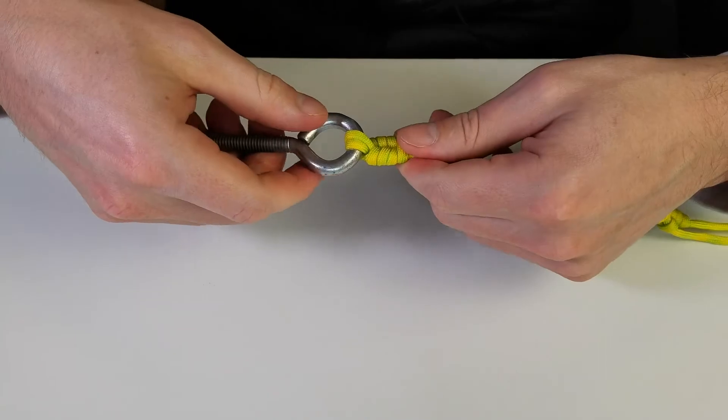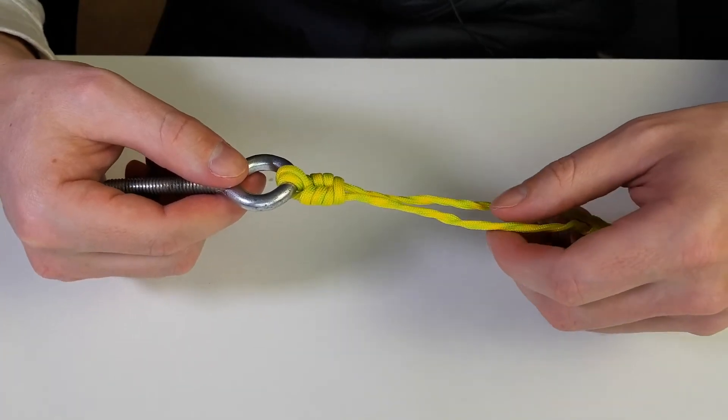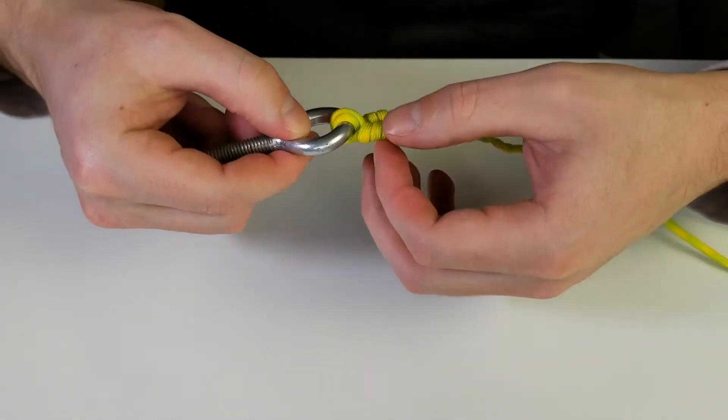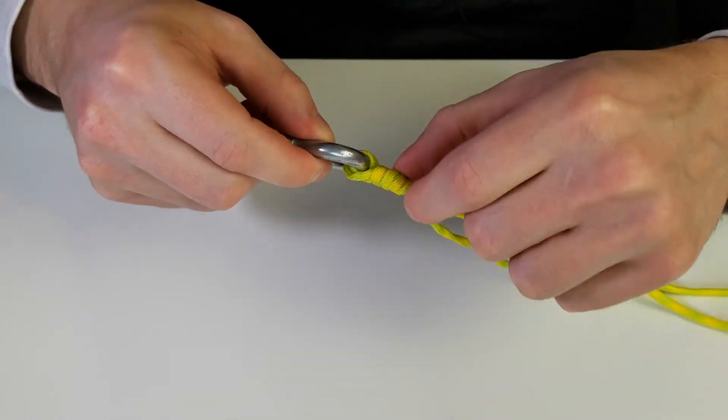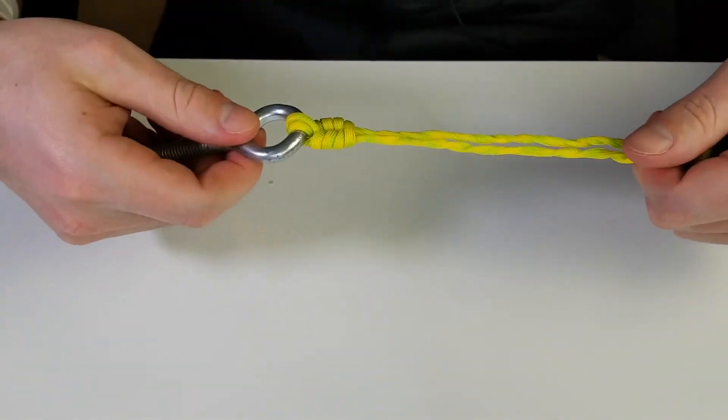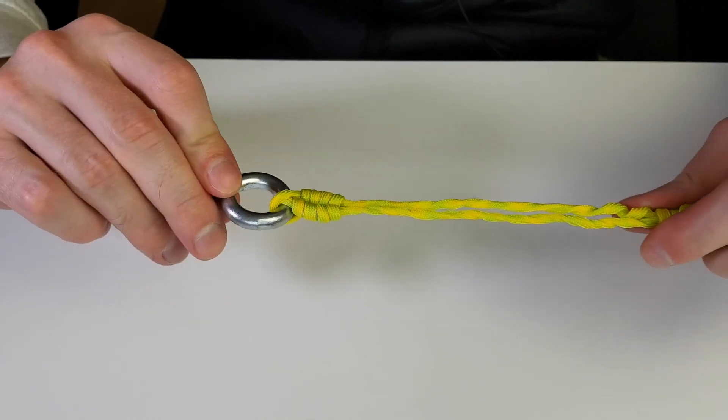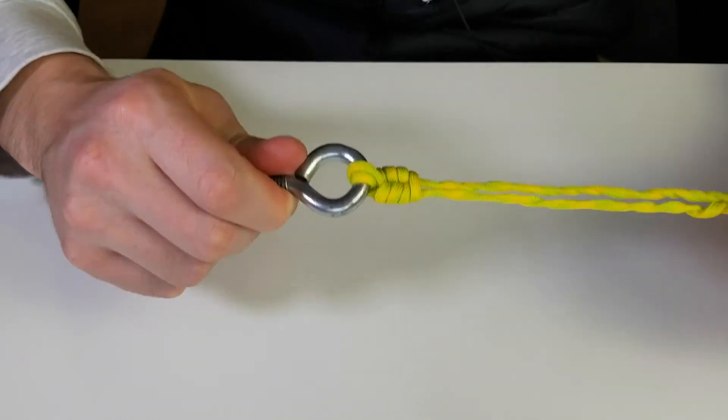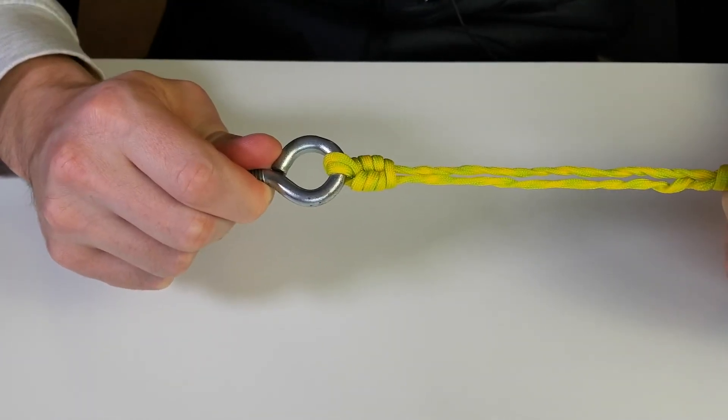This is a simple knot that will give you some added protection from the double lines and the extra twists. If one of these lines does break, you can potentially save your lure. There is the simple offshore swivel knot.